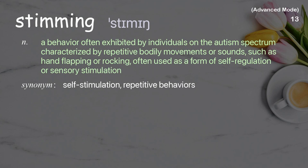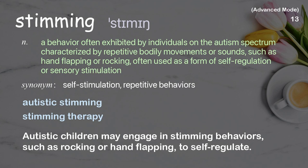Stimming: a behavior often exhibited by individuals on the autism spectrum, characterized by repetitive bodily movements or sounds, such as hand flapping or rocking, often used as a form of self-regulation or sensory stimulation. Examples: autistic stimming, stimming therapy. Autistic children may engage in stimming behaviors, such as rocking or hand flapping, to self-regulate.